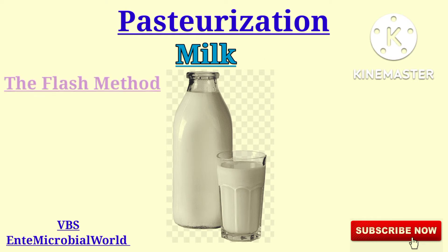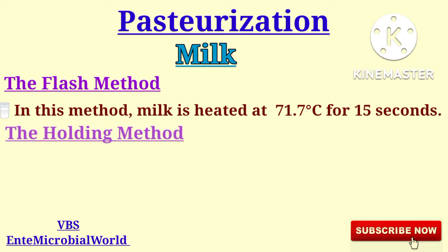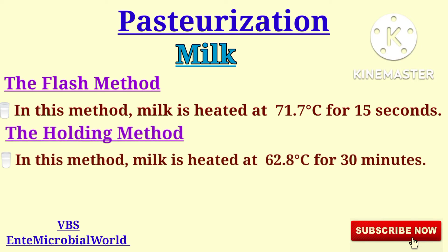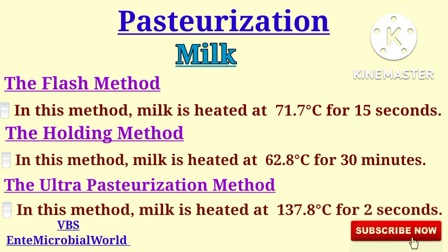Some examples for milk: In the flash method, milk is heated at 71.7 degrees Celsius for 15 seconds. In the holding method, milk is heated at 62.8 degrees Celsius for 30 minutes. In the ultra-pasteurization method, milk is heated at 137.8 degrees Celsius for at least 2 seconds.